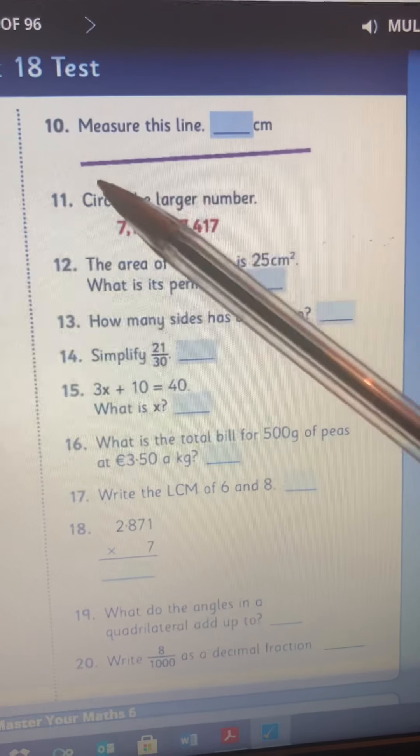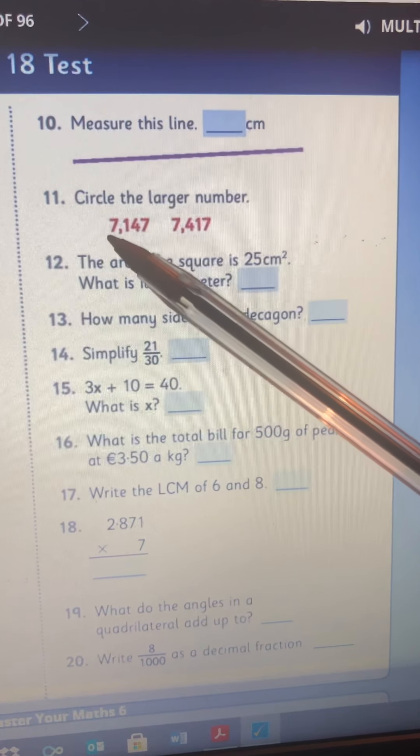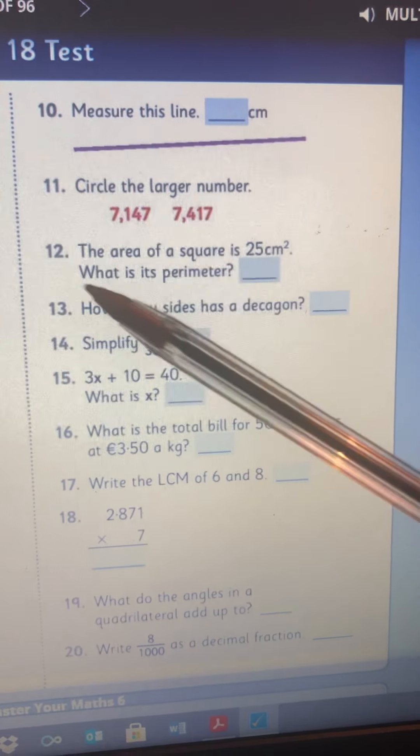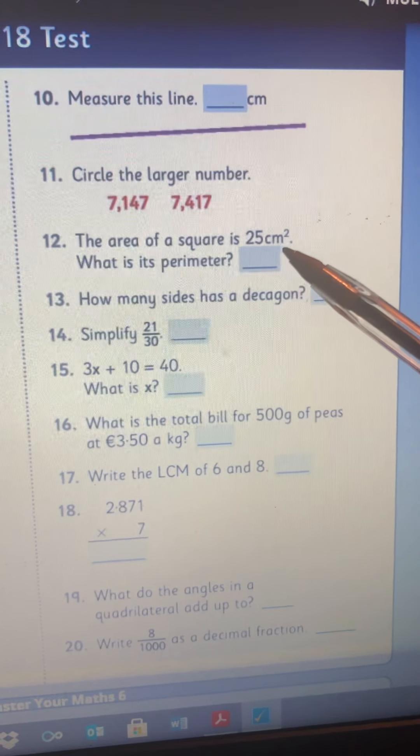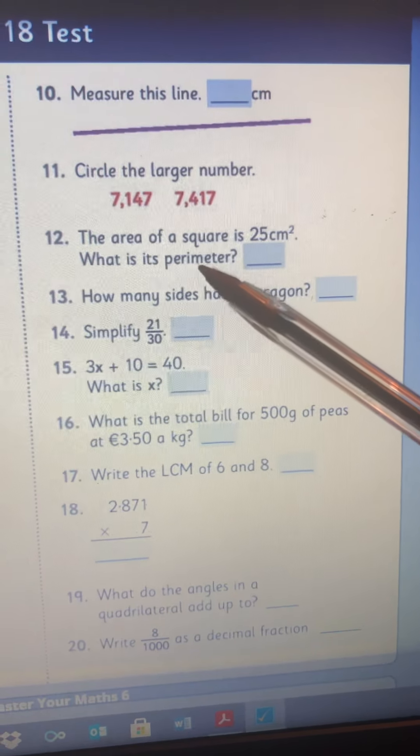Number 10, measure this line. You need a ruler. 11, very straightforward. 12, the area of a square is 25 centimeters squared. What is the perimeter?